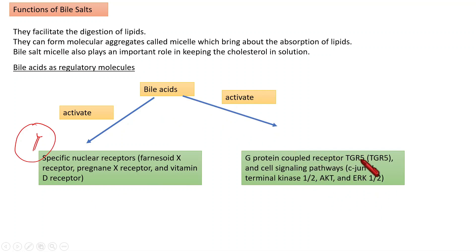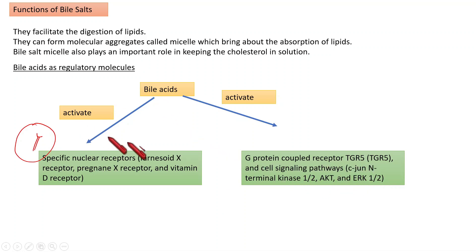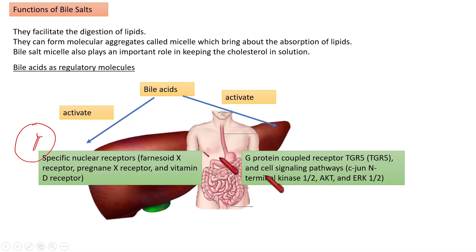Bile acid can also activate certain G-protein coupled receptors. These receptors are found on the cell membrane rather than the nuclear membrane. Examples of such membrane receptors include TGR5 and cell signaling pathways like c-Jun. These receptors are found in liver and gastrointestinal tract cells.